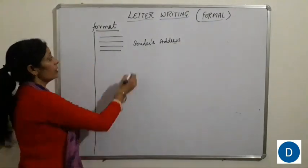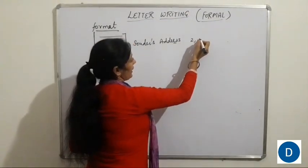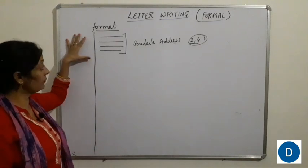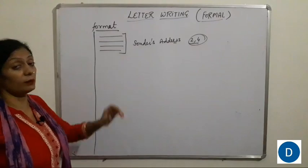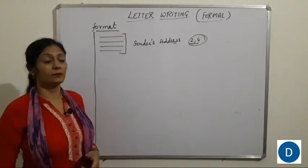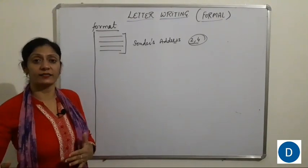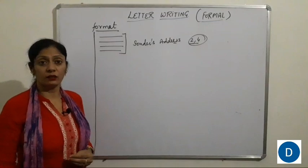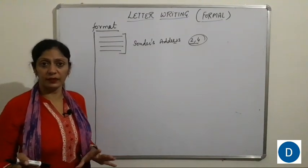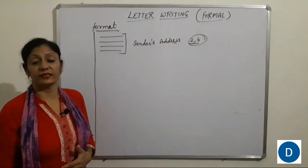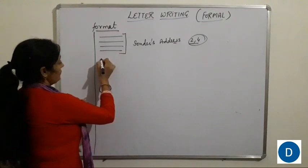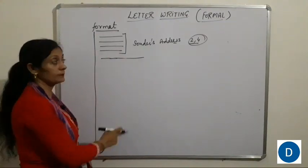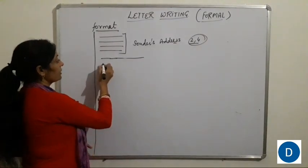The sender's address — always remember, you can write it in minimum two lines and maximum four lines. There should be a sequence in writing the address; we always start from the small area to the large area. First write house number, then colony or ward number, then city, then state. After that, leave a single line space. You have to give a single line space between each part of the format.